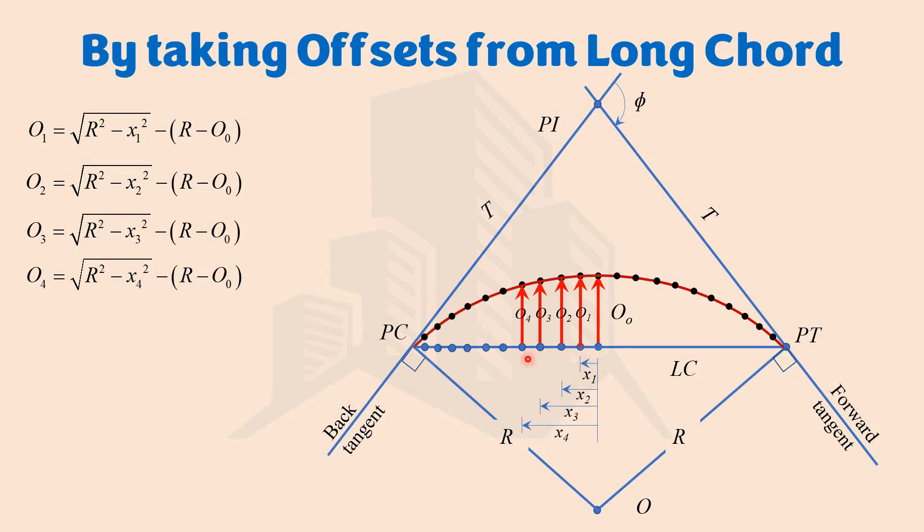The accuracy of the curvature depends on the number of points taken — more points on the long chord means greater accuracy. This is all from this video. In the next video we are going to discuss another method to set out a simple circular curve: the deflection angle method. Thank you for watching.